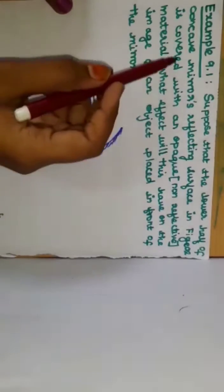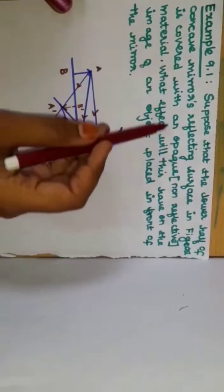Example 9.1: Suppose that the lower half of the concave mirror's reflecting surface in the figure is covered with an opaque material. So we cover this surface at the bottom.